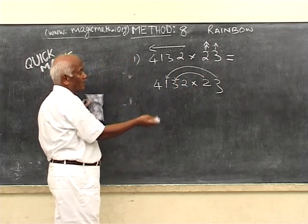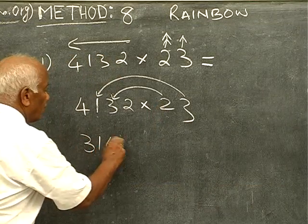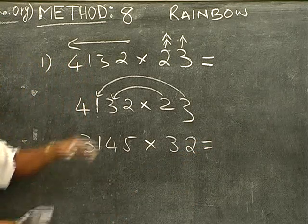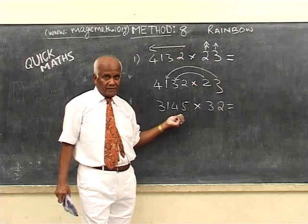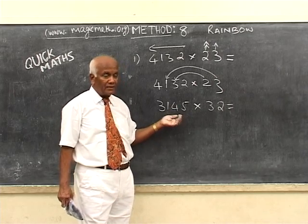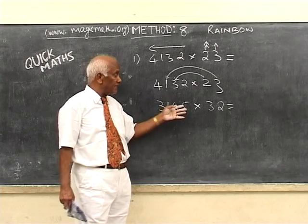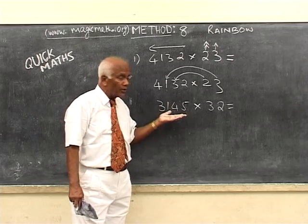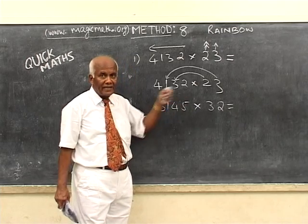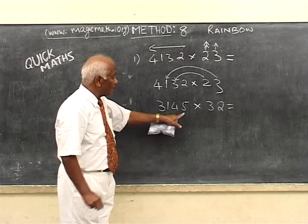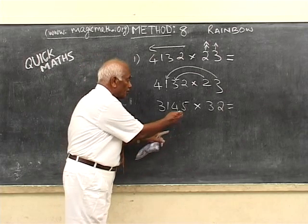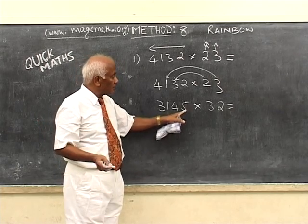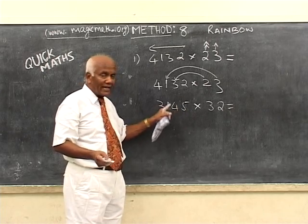Now I shall write another number and do it: 3, 1, 4, 5 into 32. We will not draw the arrows. But I suggest, because these sums are in the beginning, you will take time to think. There will always be a disturbance — you will forget where you were. To avoid it, keep your fingers where you are working, or put a dot. Put a dot so you know you have done that calculation.